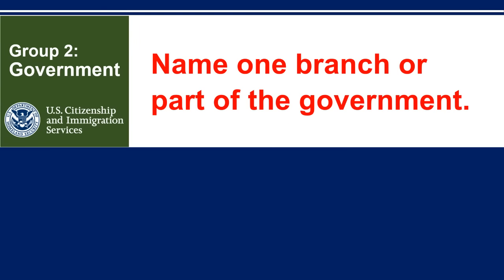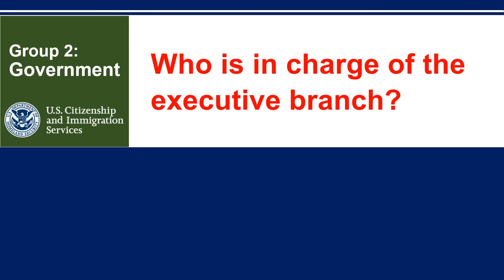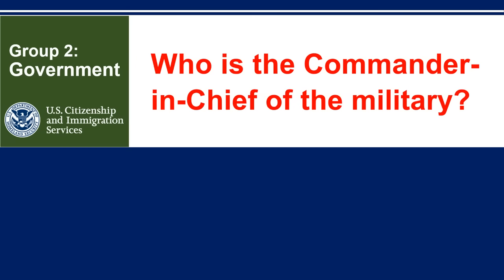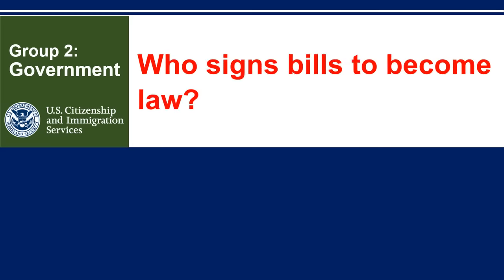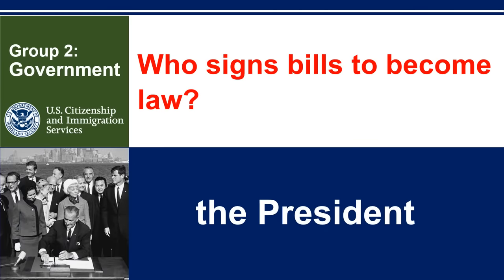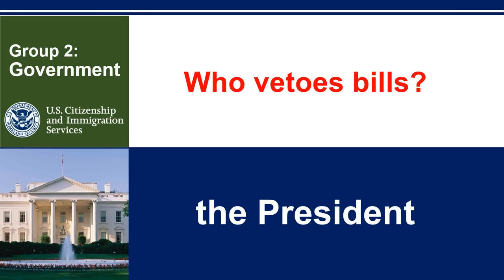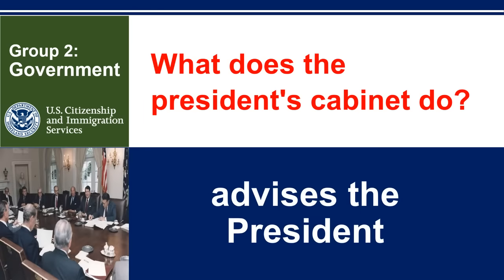Name one branch or part of the government. The President. Who is the Commander-in-Chief of the military? The President. Who signs bills to become law? The President. Who vetoes bills? The President. What does the President's Cabinet do? Advises the President.